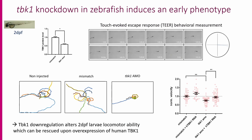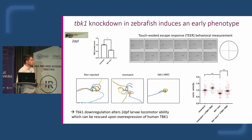We confirmed the phenotype of zebrafish injected with TBK1 morpholino, with approximately 50% decreased expression confirmed by western blot. We then investigated motor behavior using a touch-evoked escape test. The traces of TBK1 morpholino-injected zebrafish showed a significant decrease in motor behavior. Interestingly, injection of human TBK1 RNA was sufficient to rescue this motor phenotype.